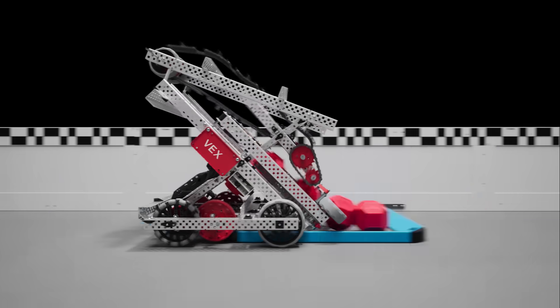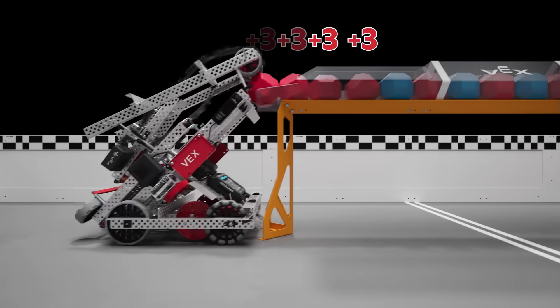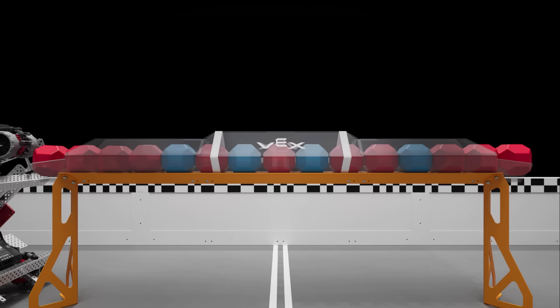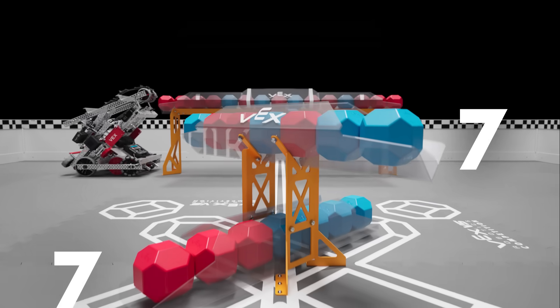Points are scored by placing blocks inside of goals. Each block scored is worth three points. Long goals are capable of holding up to 15 blocks, while center goals can only hold up to seven blocks.